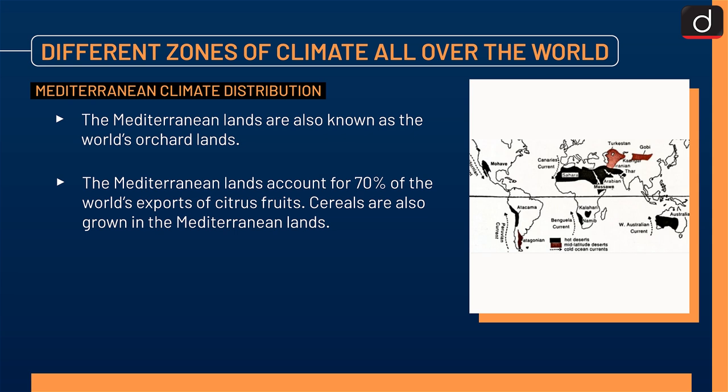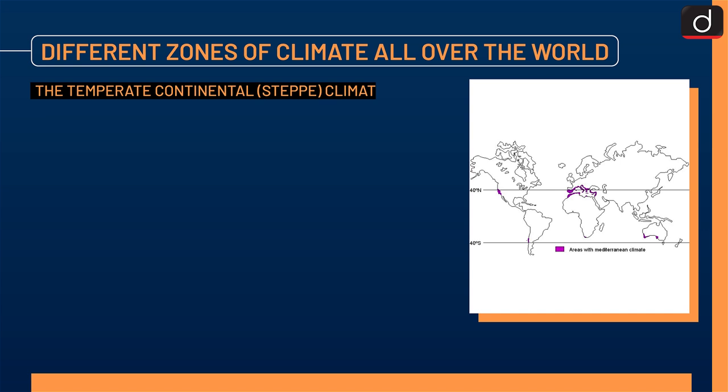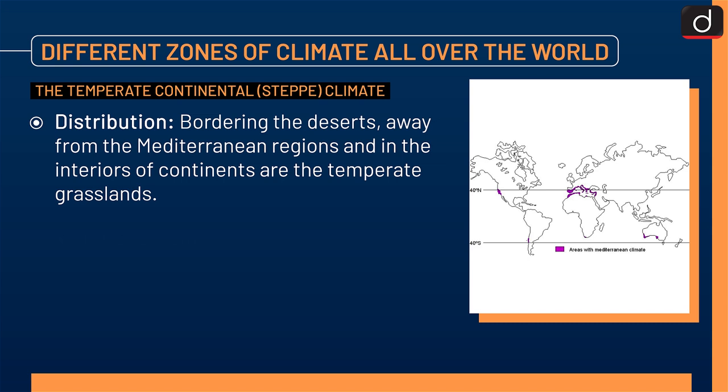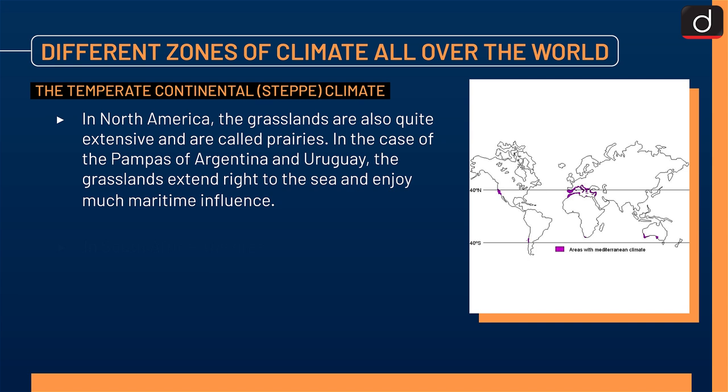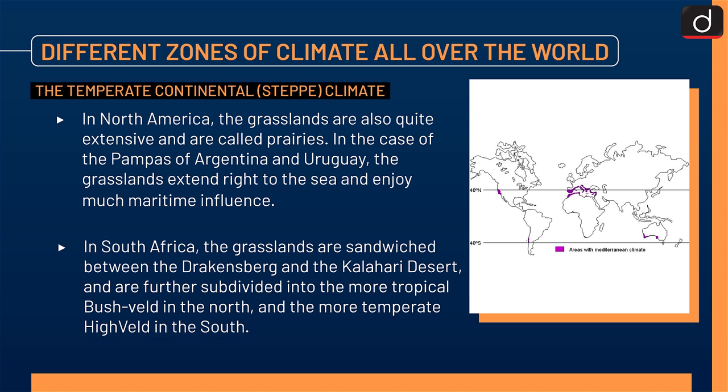The next zone is the Temperate Continental Steppe climate. Distribution: bordering the deserts, away from the Mediterranean regions and in the interiors of continents, are the temperate grasslands. In the Northern Hemisphere, the grasslands are far more extensive and entirely continental. In Eurasia, they are called the steppes. In North America, the grasslands are also quite extensive and are called prairies. In the case of the pampas of Argentina and Uruguay, the grasslands extend right to the sea and enjoy much maritime influence. In South Africa, the grasslands are sandwiched between the Drakensberg and the Kalahari desert and are further subdivided into the more tropical bushveld in the north and the more temperate high veld in the south.